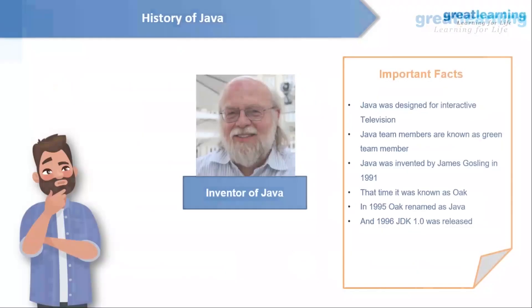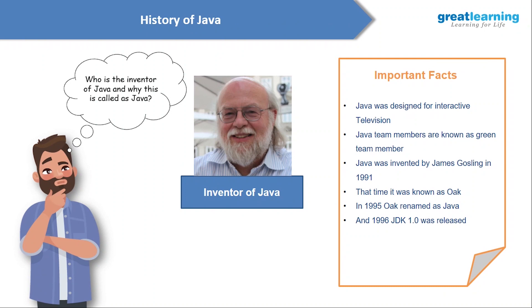Now we'll see the history of Java and why the language is named Java. Java was designed for interactive televisions, but it was too advanced for the digital cable television industry at that time. The history of Java starts with the Green Team. Java team members are known as Green Team members. The Java project was initiated to develop a language for digital devices such as set-top boxes, televisions, and so on. Later, Java technology was incorporated by Netscape.